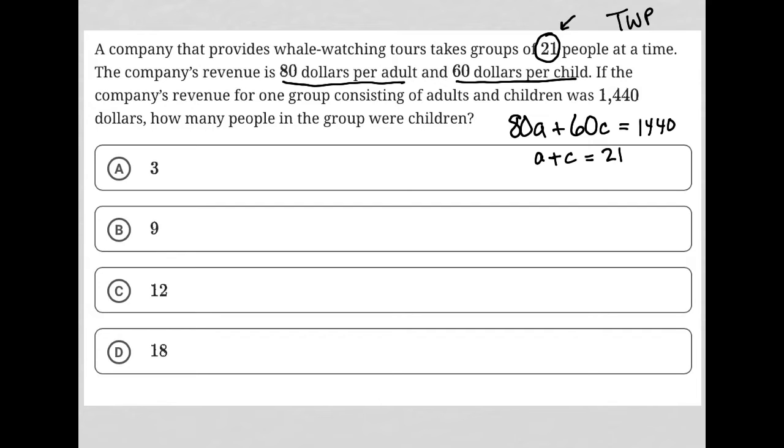How many people in the group were children? We're basically finding out what is the value of C. I am going to treat this like a system of equations because it is.